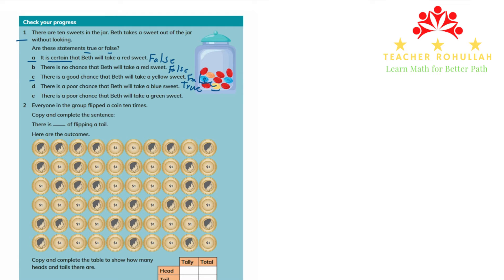Statement E says there is a poor chance that Bet will take a green sweet. We see that there are no green sweets in this jar, so this is false. There is actually no chance at all of taking a green sweet.